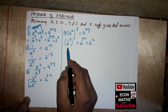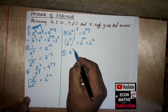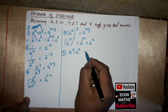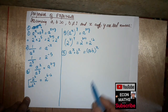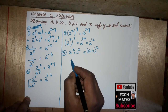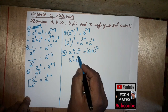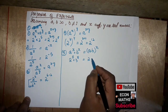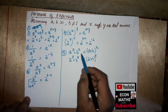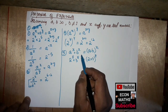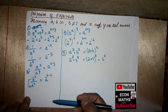The fifth property is: a to the power x times b to the power x equals a·b to the power x. For example, 2 to the power 8 times 3 to the power 8 becomes 2 times 3 to the power 8. When the exponents are the same, the bases are multiplied, giving 6 to the power 8.